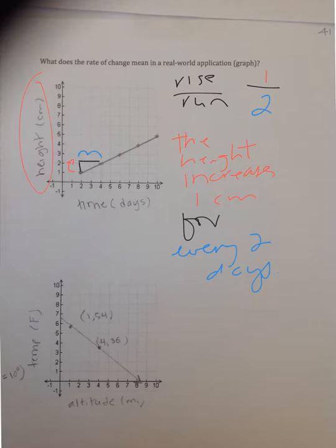Now in the bottom one, you really can't just count because of the way that the graph is set up. The x-axis is the altitude in miles. The y-axis is the temperature in Fahrenheit. And each degree is 10 degrees. So let's actually find the slope here. We're going to have to do delta y over delta x. Your y values would be 54 and 36, and your x values would be 1 and 4. So you end up with 18 over negative 3 which is negative 6.